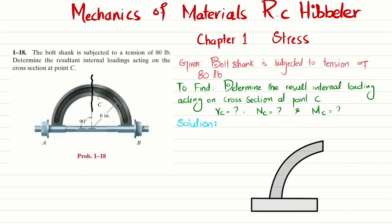This is point C where you have a normal force Nc when you cut it. There will be a shear force Vc and a reaction moment Mc. We've been given that the shank of the bolt has tension, so the force exerted by this bolt on this portion will be in this direction, and this will be 80 pounds.